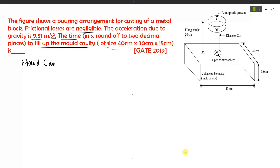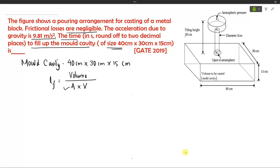The mold cavity is 40 centimeters by 30 centimeters by 15 centimeters. Filling time is asked in the question, and we have a standard formula: filling time equals volume of the mold cavity divided by A times v, where A is the area of cross section and v is the velocity through the sprue.